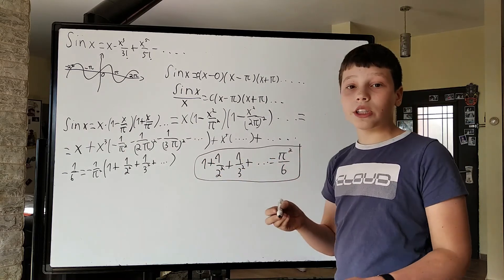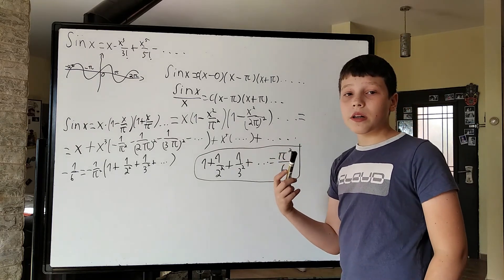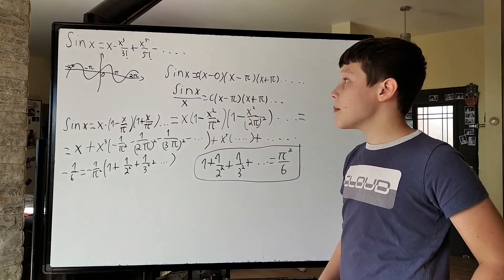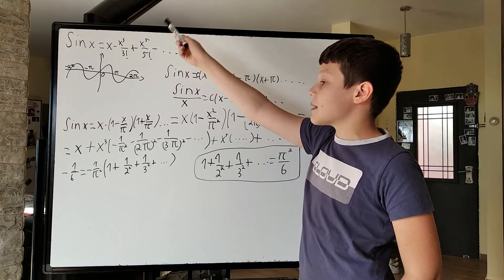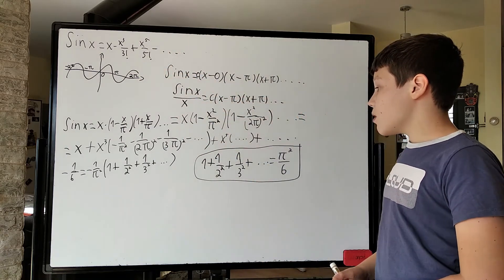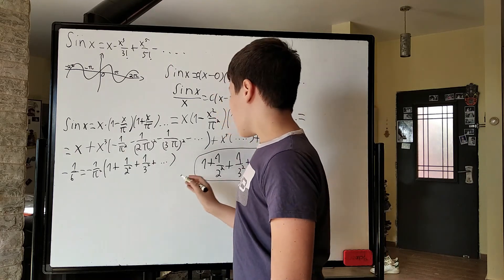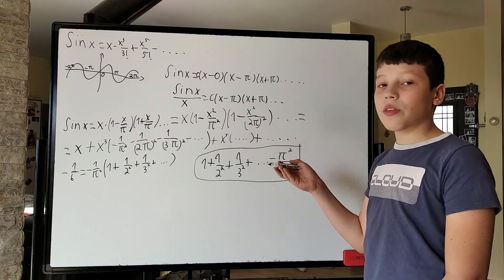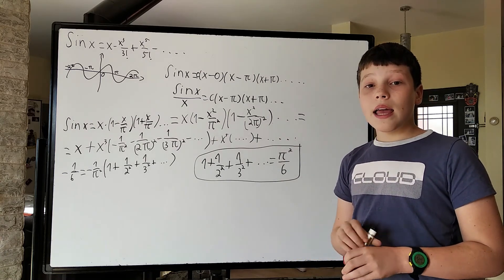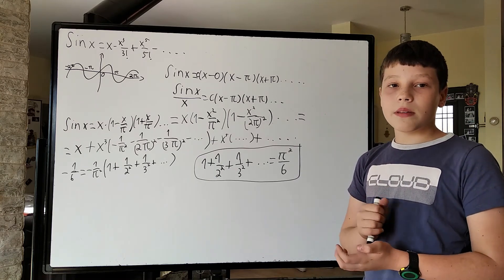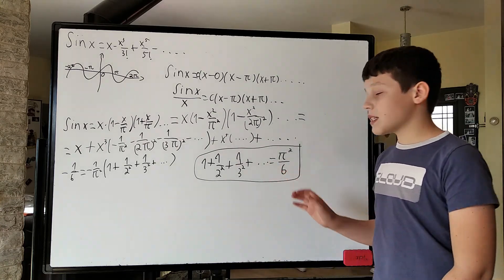This is how Euler originally did it. Before I end the video, Euler also found the x to the 5th term, x to the 7th term, and generally x to any power term, setting them equal to the coefficients in the Taylor series. He found a formula for all these for even powers. This is actually called the zeta function — zeta of p equals 1 plus 1 over 2 to the p plus 1 over 3 to the p plus 1 over 4 to the p. What Euler did was find a formula for zeta of p when p is an even natural number. This is just zeta of 2, which is pi squared over 6.